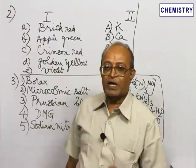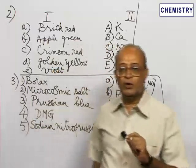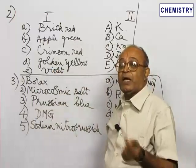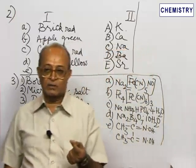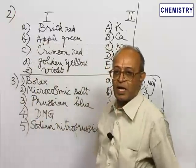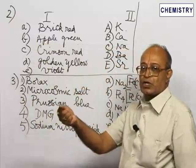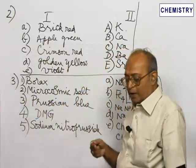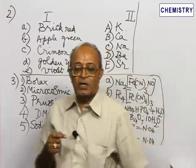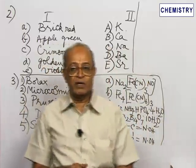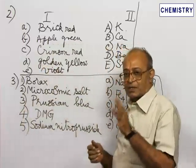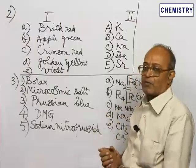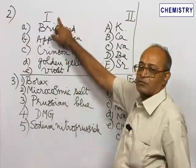In this flame test, what we normally do is we take a small amount of the given substance and make it into a paste with hydrochloric acid. This paste is then introduced into the flame of the Bunsen burner. Depending on the nature of the salt, do not think all salts will give flame coloration — only certain salts are capable of giving a characteristic flame color.